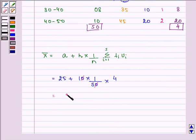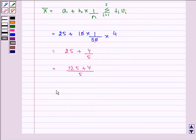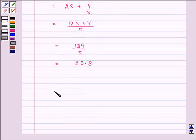So, we have 25 plus 4 upon 5, 125 plus 4 upon 5, 129 upon 5, that comes out to be 25.8. So, the value of mean by step deviation method is 25.8.